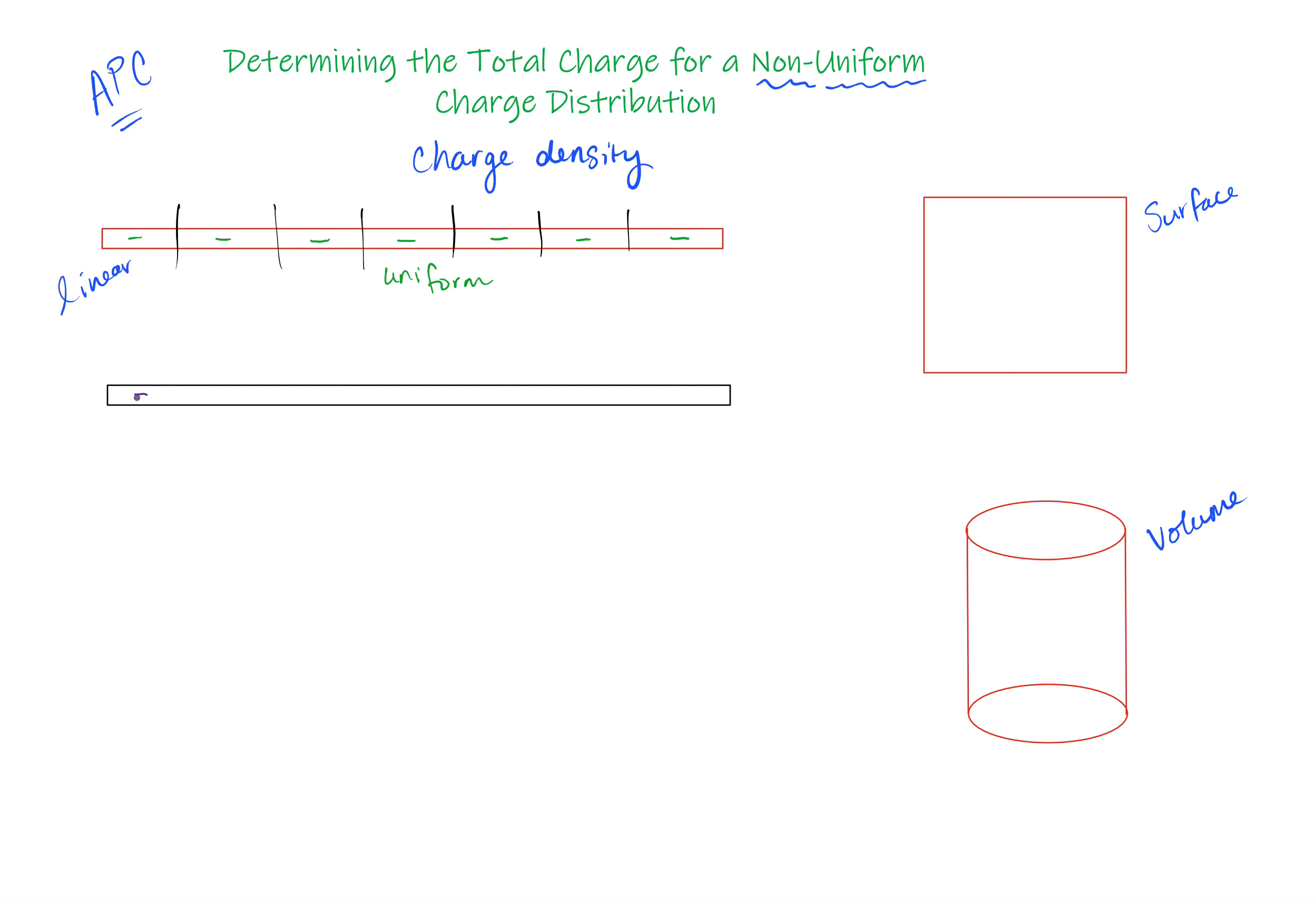So one way we could think about it, and I'll kind of line it up with this, is in the first block we have one charge, then maybe I have two, then I have three, then I have four, then I have five, and then I have six. And it gets much more dense as we go along.